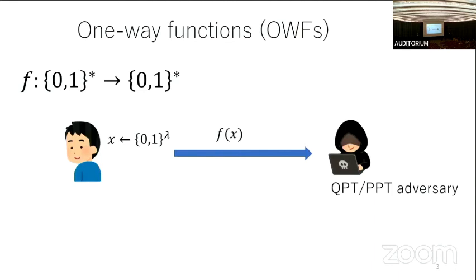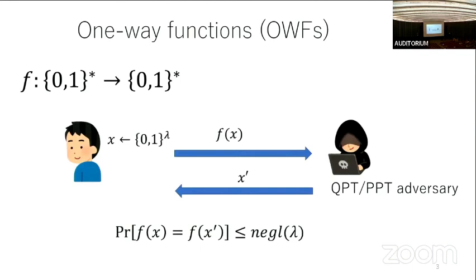If you require classical security, this adversary should be PPT — probabilistic polynomial time. The adversary must return some bit string x' that should be a pre-image of f(x). Security means the probability that x' is in the pre-image set is negligibly small. This is one-wayness, and this is the definition of one-way function.